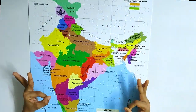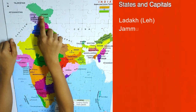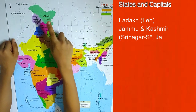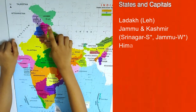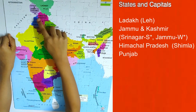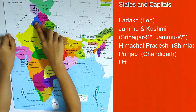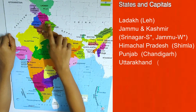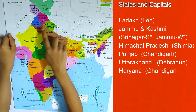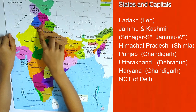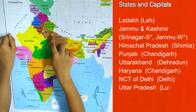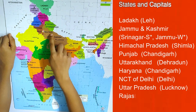States and capitals: Ladakh, capital Leh, is a Union Territory. Jammu and Kashmir, capital Srinagar and Jammu, is a Union Territory. Himachal Pradesh, capital Shimla. Punjab, capital Chandigarh — Chandigarh is a Union Territory. Uttarakhand, capital Dehradun. Haryana, capital Chandigarh. Delhi, Eastern Union Territory. Uttar Pradesh, capital Lucknow.